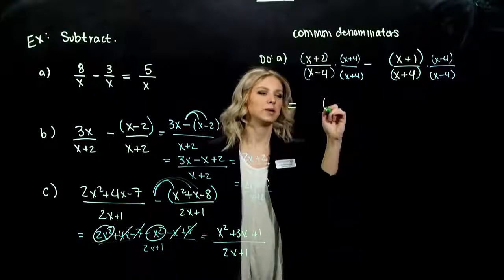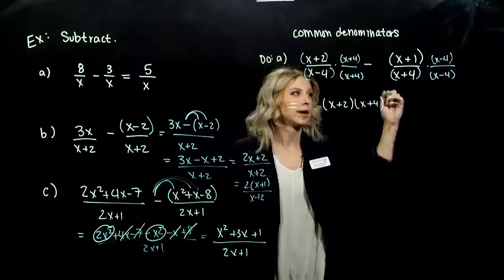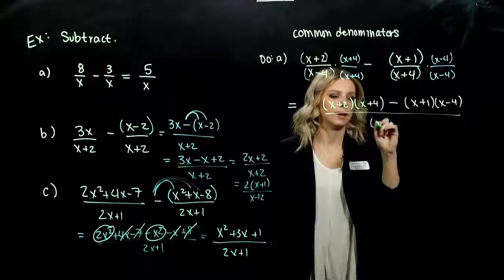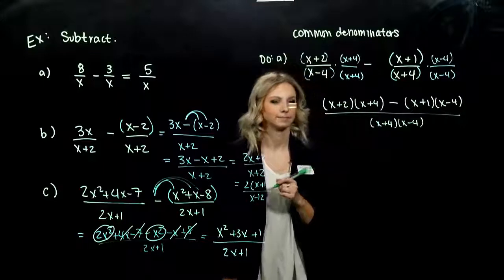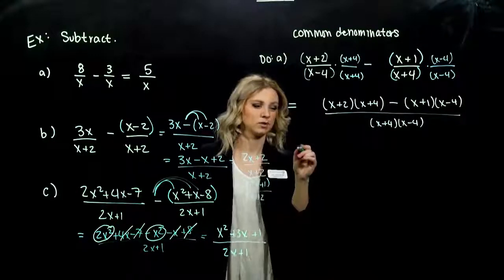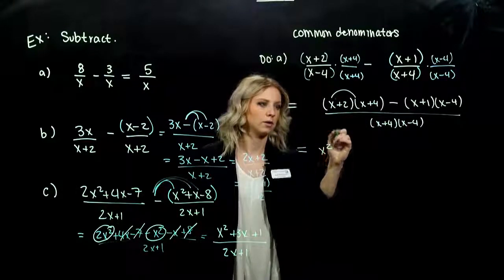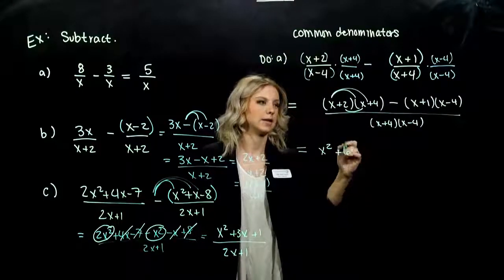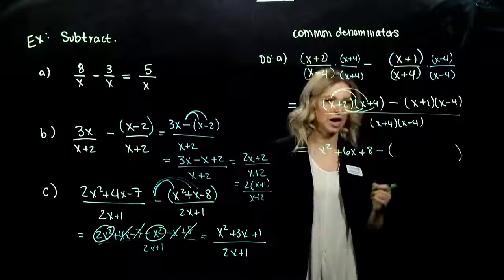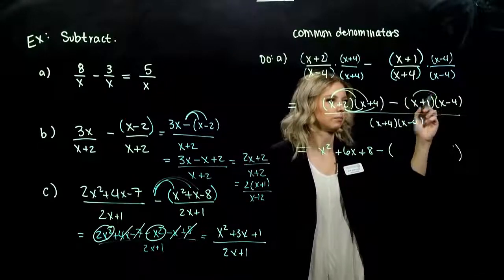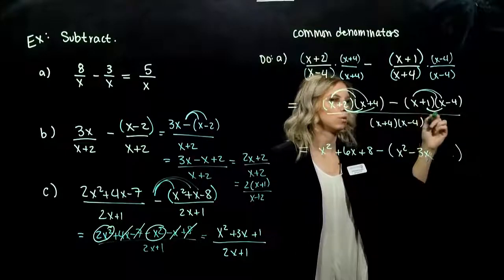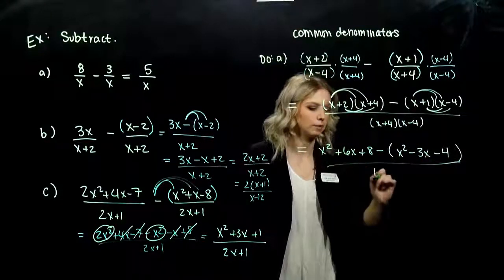Let's start simplifying. What do I have up top? x plus 2 times x plus 4, and I'm subtracting that entire quantity that's coming after: x plus 1 times x minus 4, all over x plus 4 times x minus 4. To simplify that numerator, we have to FOIL it all out. We get x squared, plus 4x, plus 2x — so 6 on the inside — and plus 8. Now whatever comes after that subtraction, I'm subtracting that entire quantity, so I still need groupings around it. That gives us x squared, minus 4x, plus 1x, minus 3, and 1 times negative 4 is negative 4. All over our LCD.